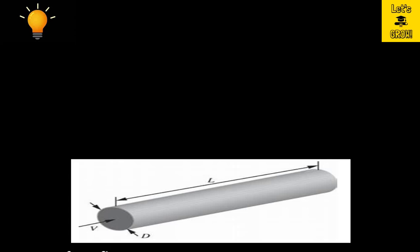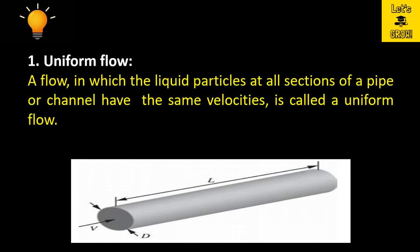We will discuss these types of flows one by one. Starting with uniform flow: a flow in which the liquid particles at all sections of a pipe or channel have the same velocities is called a uniform flow. On a piece of pipe, if we take two sections — section one and section two — the velocity and hydraulic parameters like depth of flow remain the same over space, at different sections.